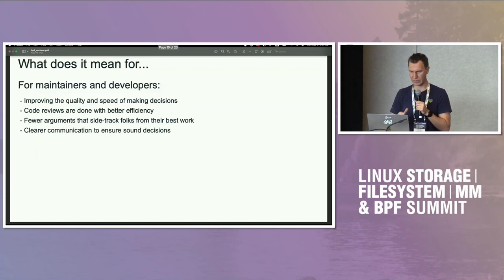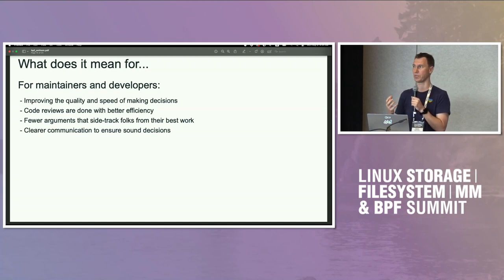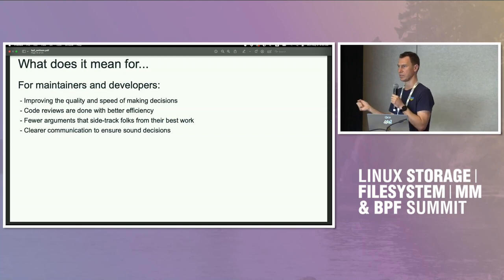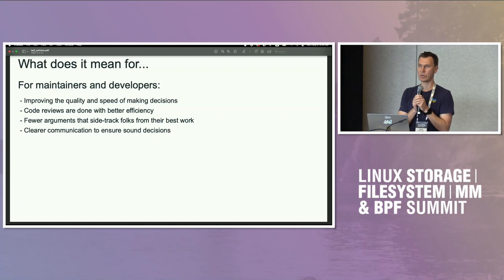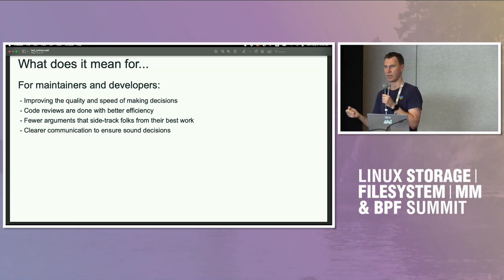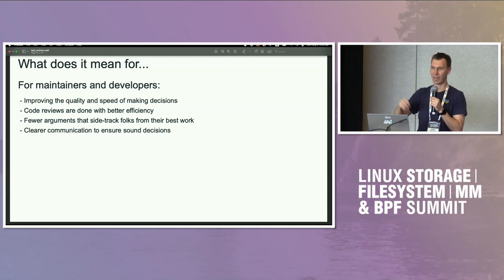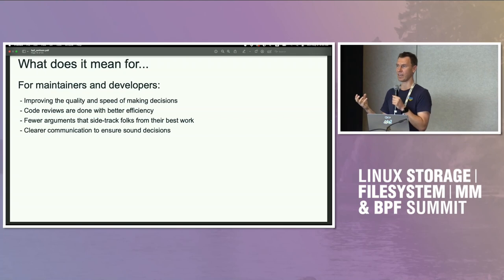Why is this relevant? It helps maintainers and developers get on the same page and reduces friction once these values of innovation are understood. A real example is the helpers vs. KFUNC discussion. Helpers enabled us to grow the BPF ecosystem over many years, but KFUNCs were introduced about a year and a half ago and provide higher velocity of innovation. Recently at KubeCon, someone added a KFUNC call from a BPF program to WebAssembly — porting the whole WebAssembly into the kernel through an additional KFUNC.